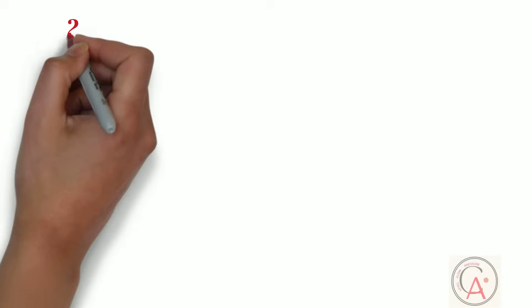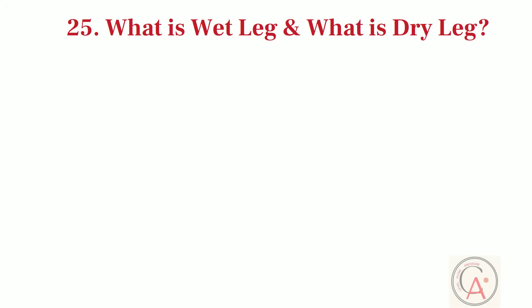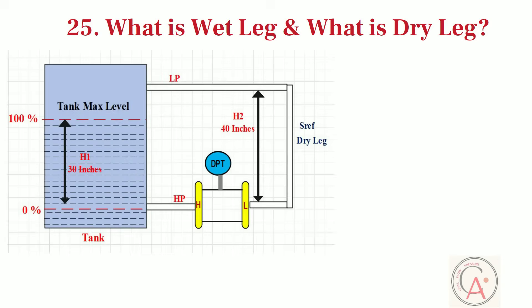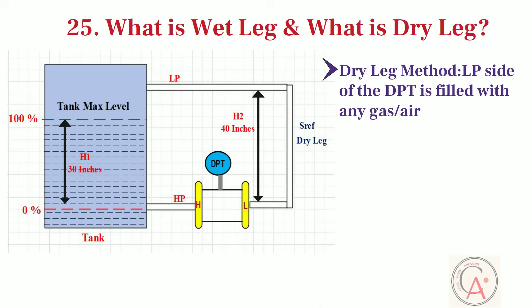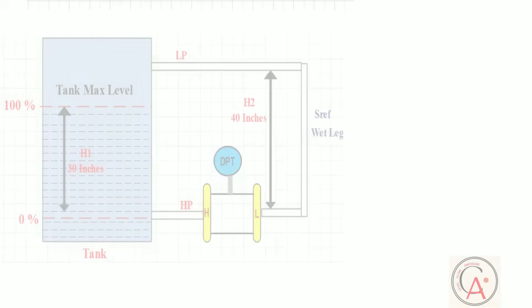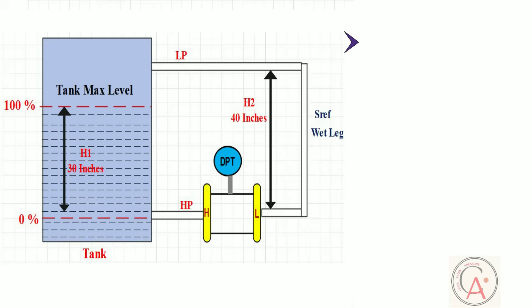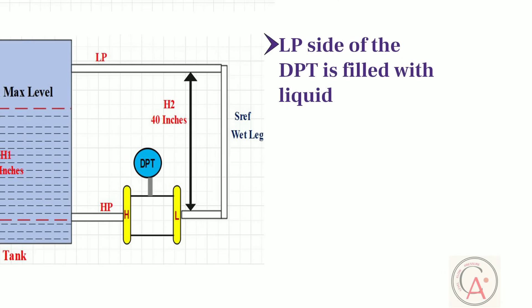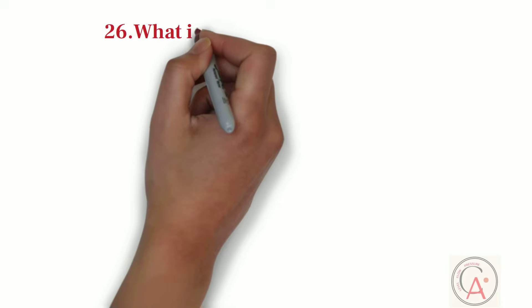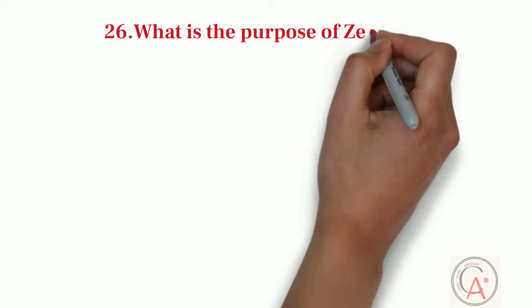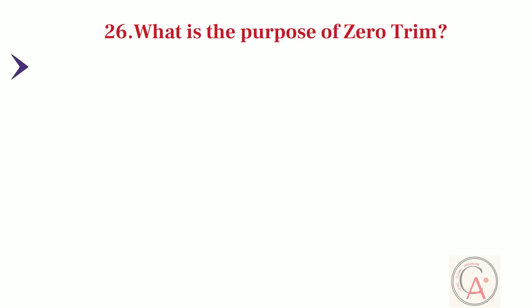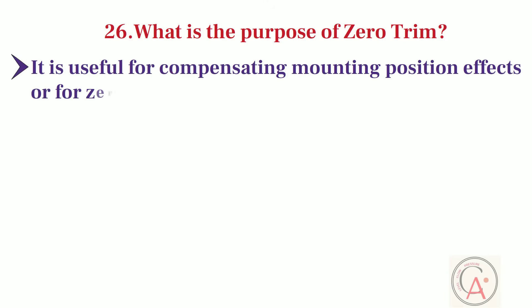Twenty-fifth question is, what is wet leg and what is dry leg in level measurement? In dry leg method of calibration, low-pressure side of DPT is filled with any gas or air. And in wet leg method of calibration, low-pressure side of DPT is filled with any liquid. Next question is, what is the purpose of zero trim in pressure transmitter and in differential pressure transmitter? Zero trim is useful for compensating mounting position effects, or for zero shifts due to static pressure in differential pressure applications.